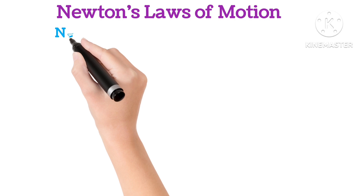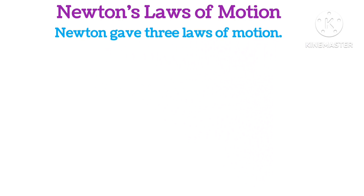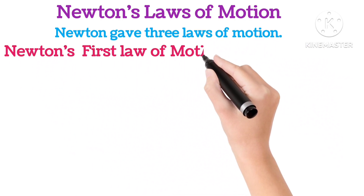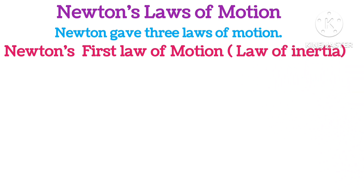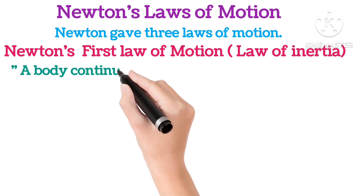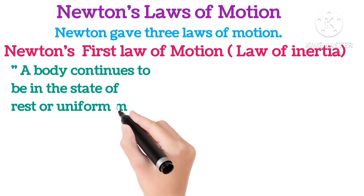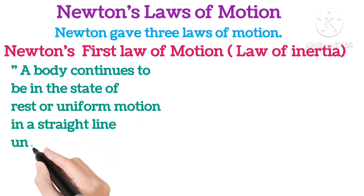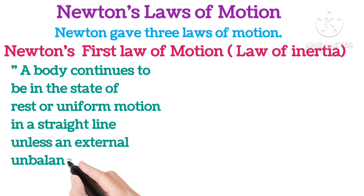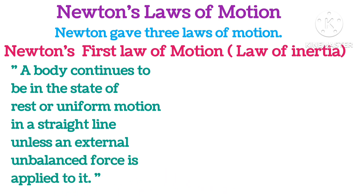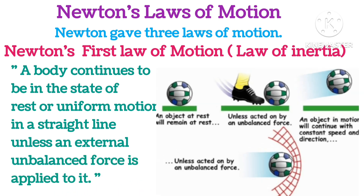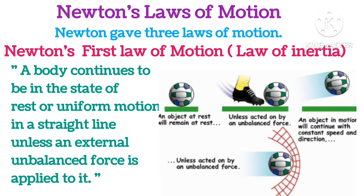Newton's Law of Motion. Newton gave three laws of motion. Newton's first law of motion is also known as the law of inertia. A body continues to be in the state of rest or uniform motion in a straight line unless an external unbalanced force is applied to it. As you can see in the picture, a ball remains at rest until kicked, and when it is kicked it attains motion and only stops when an external unbalanced force is applied to it.